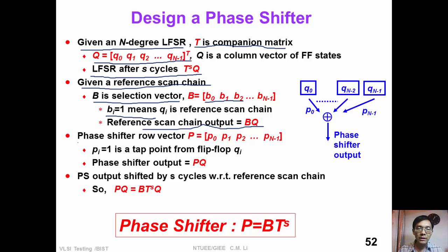So the reference scan chain output is simply B times Q. We are now asked to design a phase shifter, which is a row vector P consisting of P0, P1, P2, etc. Pi is 1 means that there is a tap point coming out from flip-flop Qi.